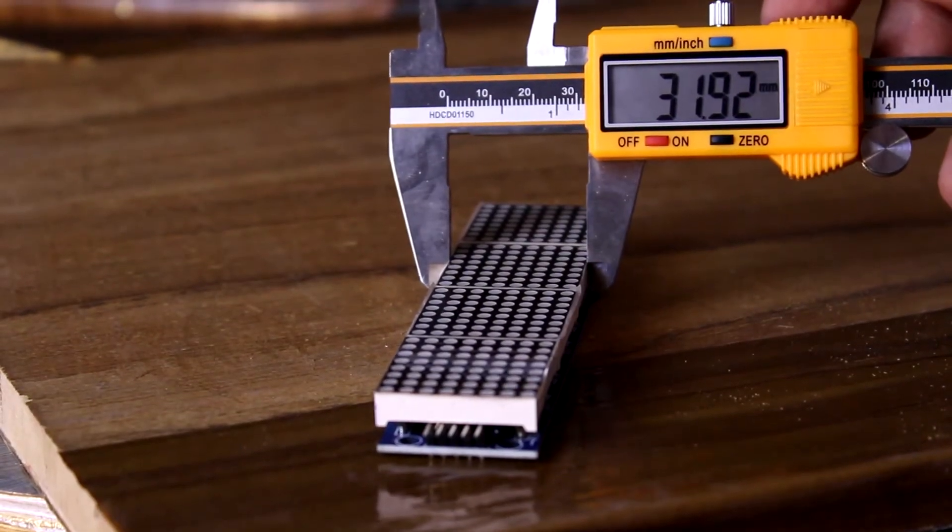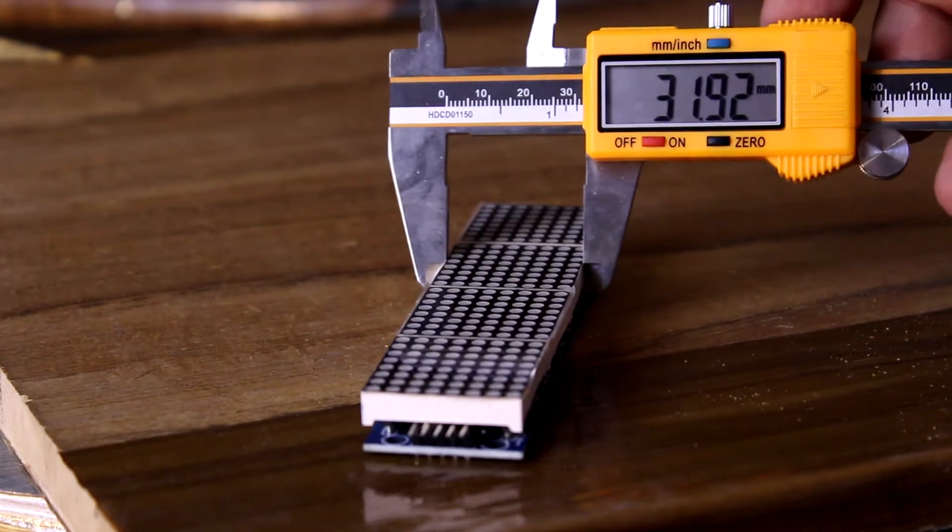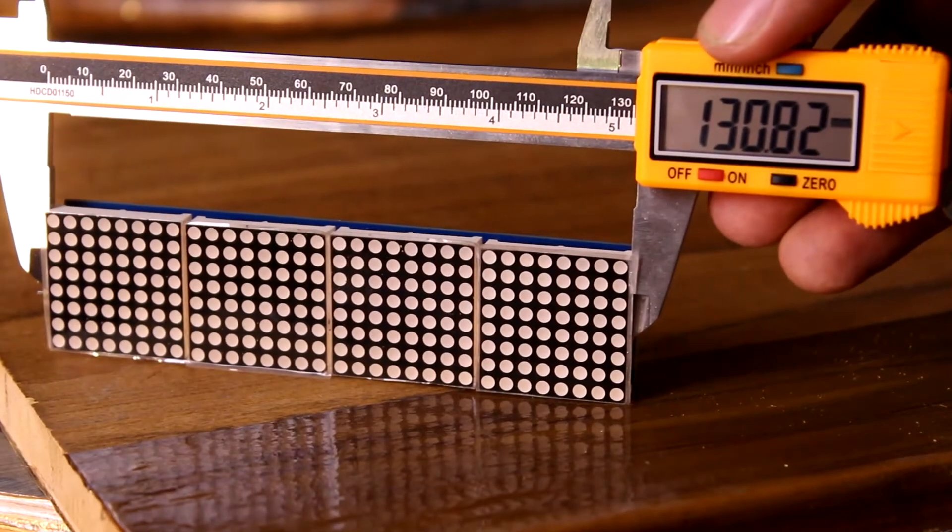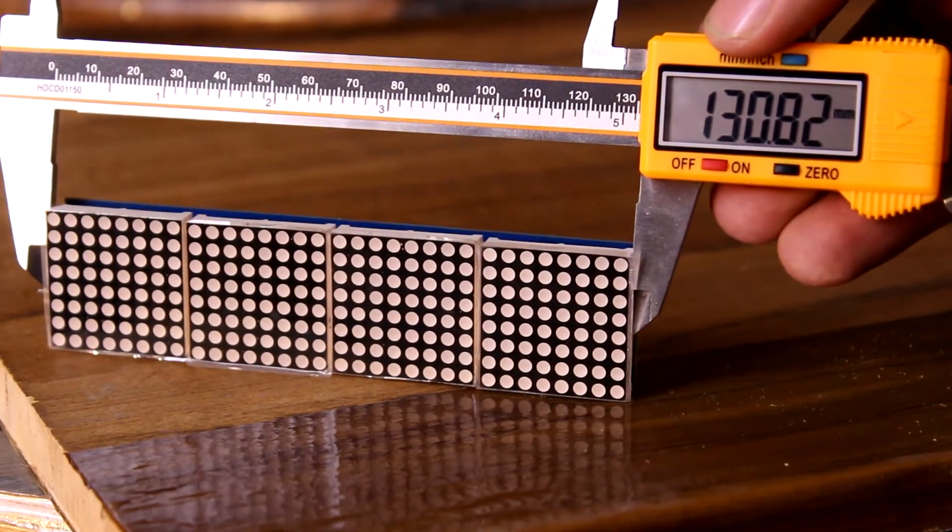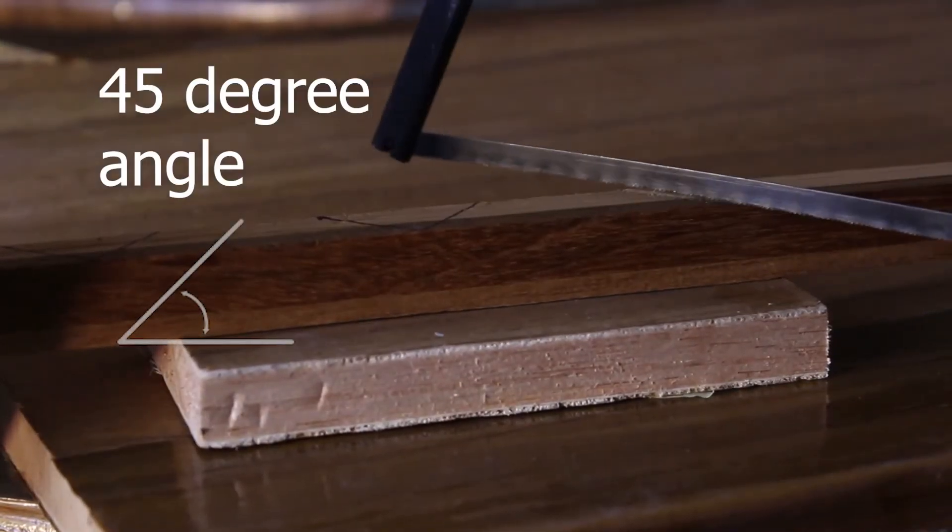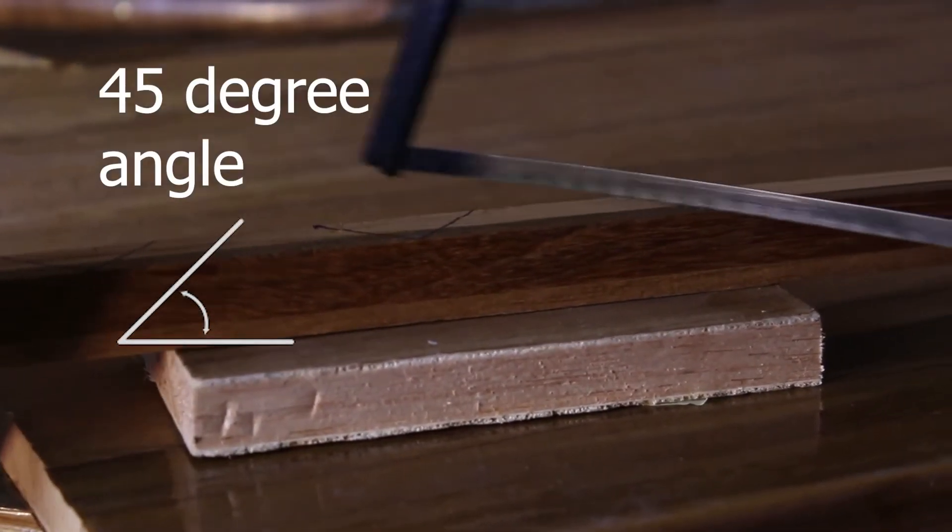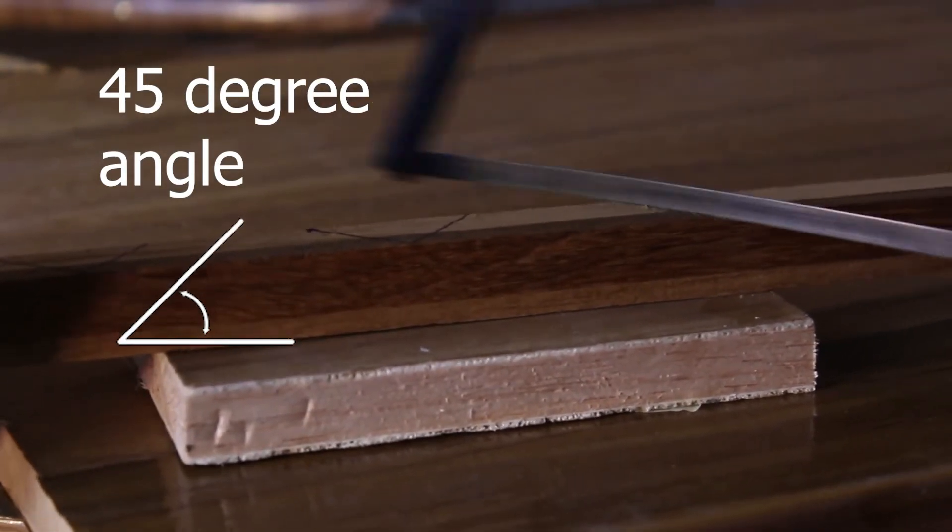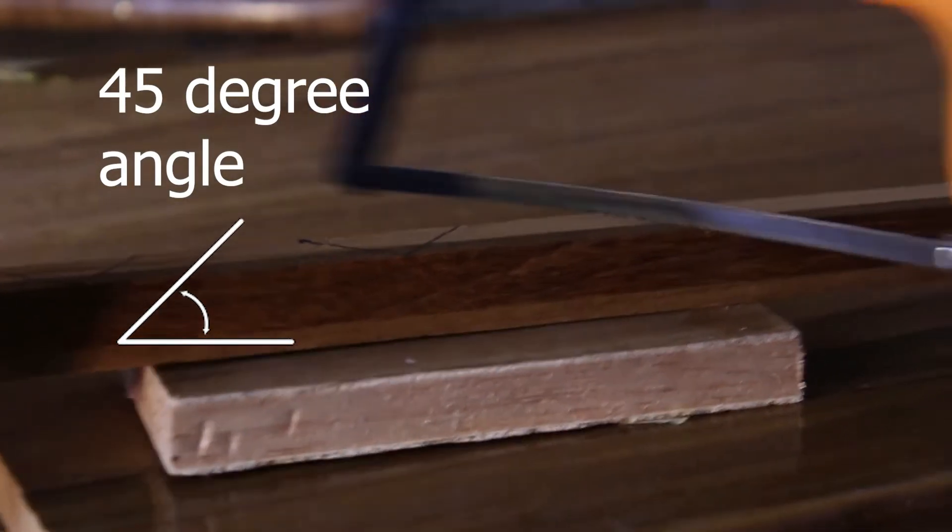Take the precise measurements of the LED display so we won't have any unneeded space. The height is 32 millimeters and the length is 130 millimeters. Add an extra millimeter to avoid mistakes. Cut the wood in 45 degree angle using a saw to make the front frame.